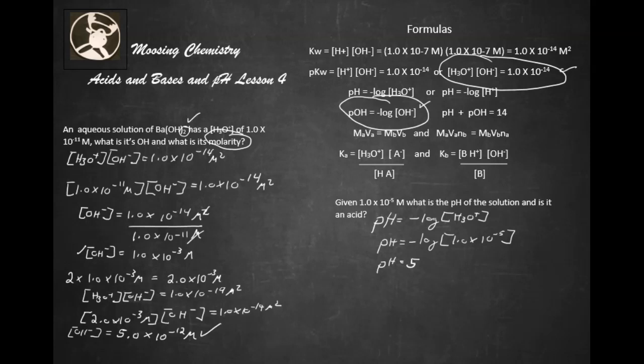Now, is that an acid? Yes, it's an acid. Because remember, 7 or less is an acid. 7 is actually neutral because water is amphiprotic, which means it's both an acid and a base. However, anything less than 7 is definitely an acid. And so, yes, it's definitely an acid.